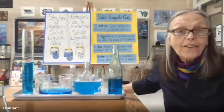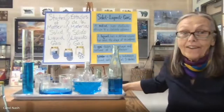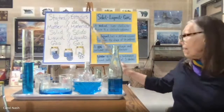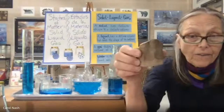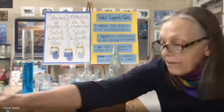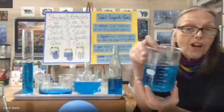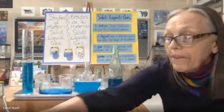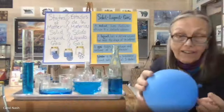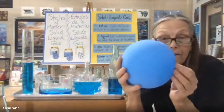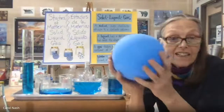Welcome to my classroom. Today we're going to talk about the three states of matter — the three forms in which matter exists. Those three forms are solid, liquid, and gas. We define a solid as having a definite shape and a definite volume, like my rock. We define a liquid as having a definite volume but no definite shape. And we define a gas as having neither a definite shape nor a definite volume — it takes the shape and volume of a container, in this case, my balloon.